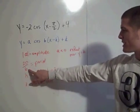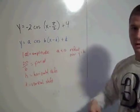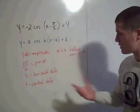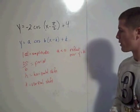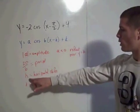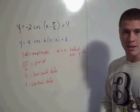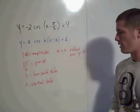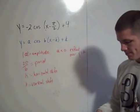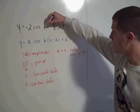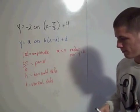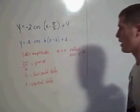Two pi divided by b is the period. Our b value is 1, so our period is 2 pi, which is the normal period for a cosine function. Our horizontal shift, we're going to shift pi halves in the positive direction, and then we're going to shift 4 units also in the positive direction. So, what does this look like?